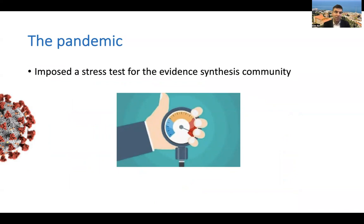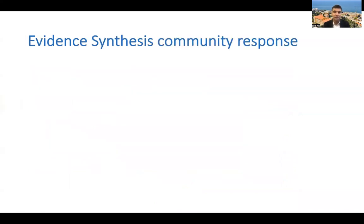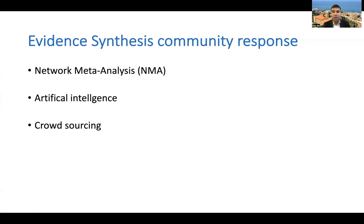So the pandemic was really a stress test for the evidence synthesis community, similar to many other communities like the trialist community, the guideline methodologist community, and the policymakers. How did the evidence synthesis community respond? They responded by deploying many of the tools they have been developing for a while, like network meta-analysis, artificial intelligence, crowdsourcing. They responded with the rapid methodology, because when the pandemic hit, policymakers needed quick answers. We used the rapid systematic review methodology, but we also used the living. The living helped us because there was a deluge of information coming out on a regular basis.